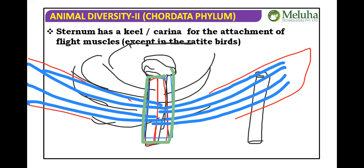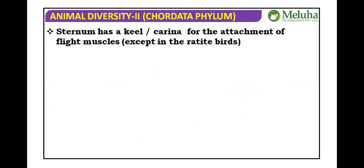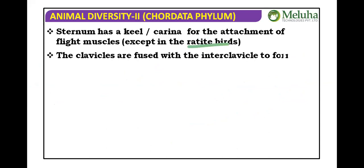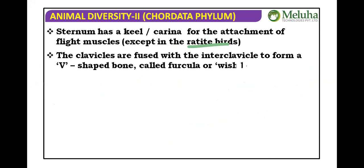Based on the sternum, birds are classified as Carinatae (flying birds with a keel) and Ratitae (non-flying birds, also called paleognaths). Ratite birds have no need for keel or carina since they don't fly.